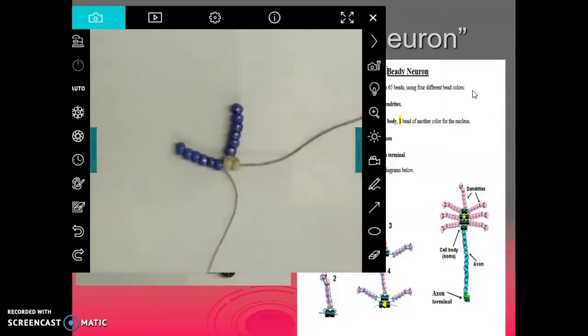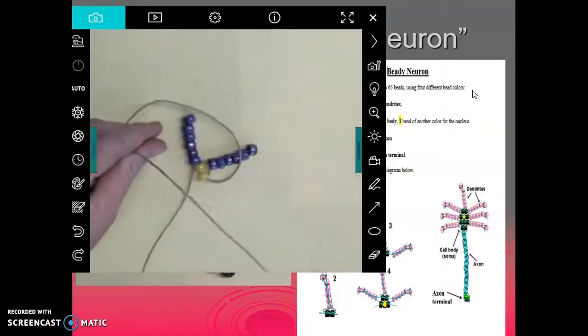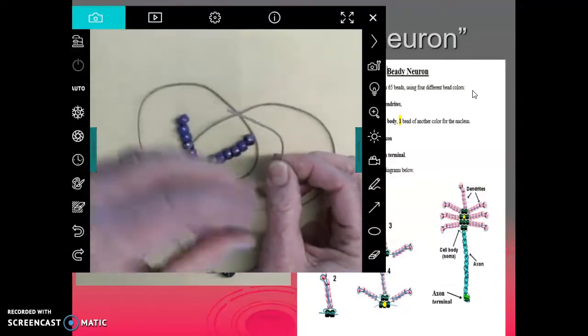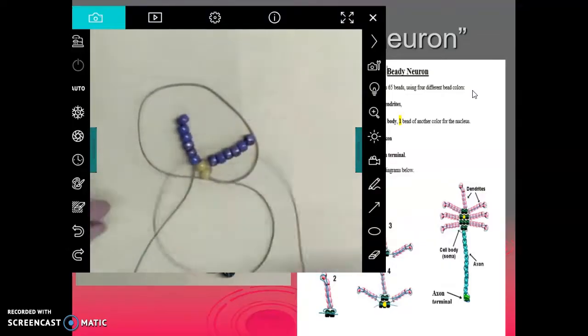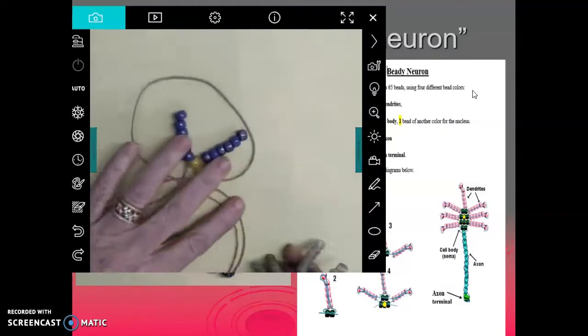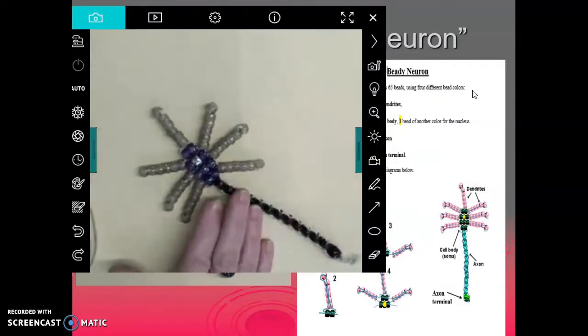And then you're going to do that same thing on this set. You're going to put six of your purples on here. You're going to get them on the string, skip the end one, pull it all the way back. And you're going to just keep working until you get to the end of the body.